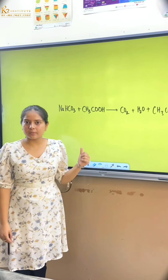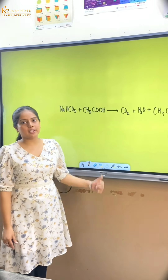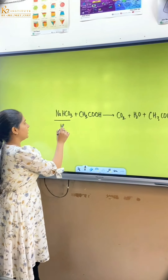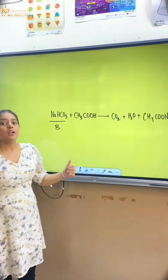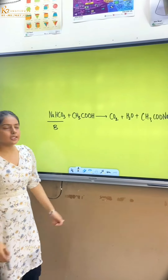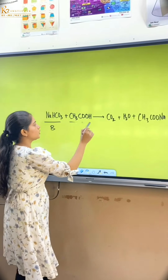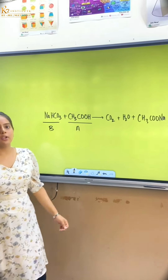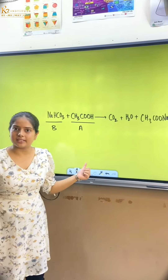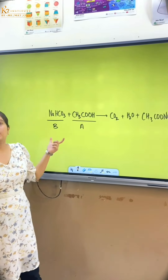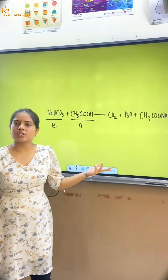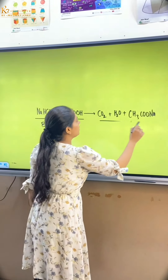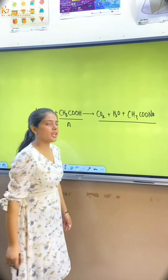Now we have to see our reactions. NaCO3, which is our base, which is our baking soda. Acetic acid, which was vinegar, was present, and it is our acid. When an acid reacts with a base, what do students call it? They do a neutralization reaction.